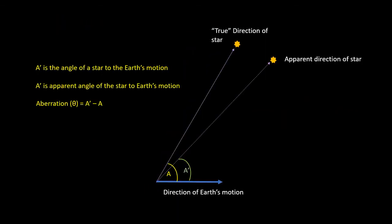Bradley was able to show that, to a very good approximation, the aberration angle, which we'll call theta, for a star at an angle A to the Earth's motion, is given by the tangent of theta equals minus V over C times sine A. And observations have proven this formula to be correct.